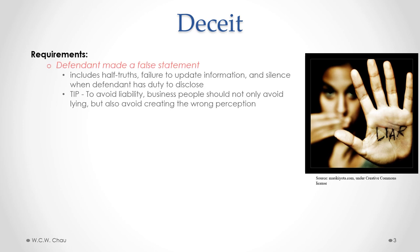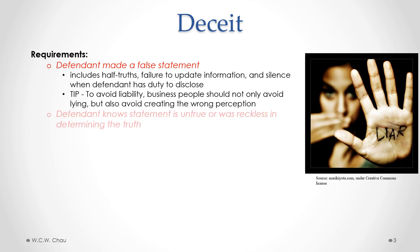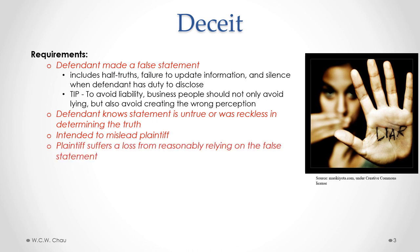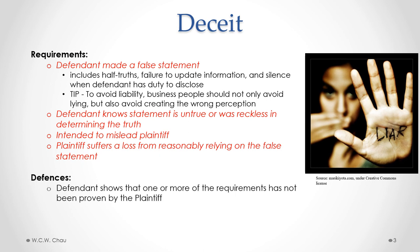The tort of deceit: the requirements are the defendant made a false statement — in other words, the defendant lied. The defendant knows the statement is untrue or was reckless in determining the truth. It was intended to mislead the plaintiff, and the plaintiff suffered a loss from reasonably relying on that false statement. There's no specific special defense to deceit, but generally the defendant would try to show that one or more of the requirements of the tort has not been proven. The usual remedy is to provide damages to compensate for the plaintiff's losses from relying on the false statement.